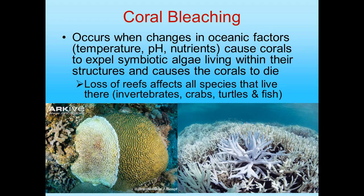Coral bleaching: healthy coral has a symbiotic relationship with algae — the algae lives in the coral and both benefit. But as temperature, pH, and salinity change, coral is forced to expel the algae, which is essentially a death sentence. The coral then dies and creates bleached coral like what's shown in the Great Barrier Reef off Australia. More and more acres of major coral reefs are dying due to changes in the oceanic environment. This affects entire ecosystems — invertebrates, sponges, fish, sharks, turtles — causing a collapse of the entire ecological pyramid of coral reefs.